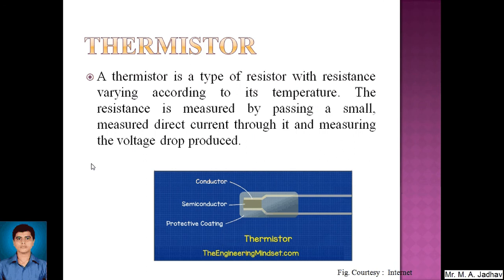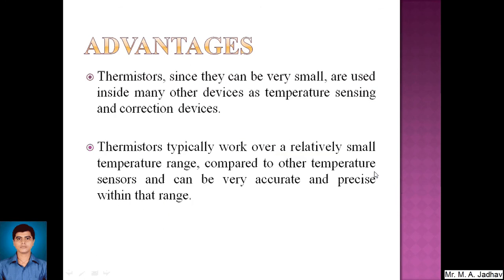Next is the thermistor. A thermistor is a type of resistor whose resistance varies according to temperature. Resistance is measured by passing a small direct current through it and measuring the voltage drop. The constructional details show two conductors with a semiconductor material connected between them, coated with a protective coating. An advantage of thermistors is that since they can be very small, they are used inside many devices as temperature sensing and correction elements. They can be very accurate and precise within their operating range.